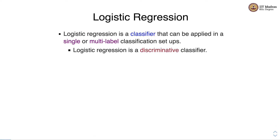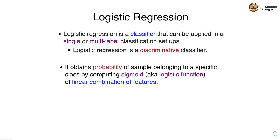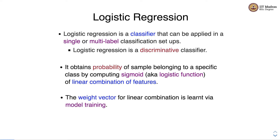Logistic regression is a classifier that can be applied in single or multi-level classification setups. It is a discriminative classifier. It obtains the probability of a sample belonging to a specific class by computing the sigmoid of a linear combination of features. Sigmoid is also called the logistic function. The weight vector for the linear combination is learned via model training.